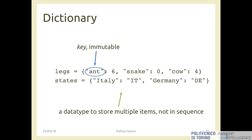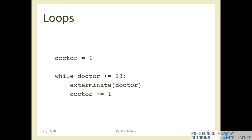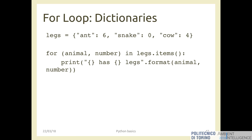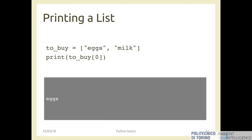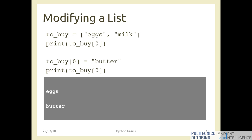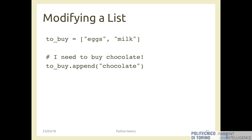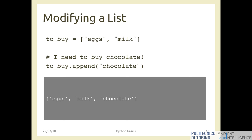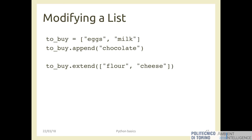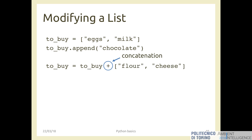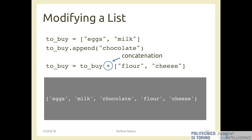The keys are immutable — you cannot change them once created. The value, instead, you can change whenever you want. We also saw how to print a list, print a single element, modify a list, replace an element, append a single element like chocolate, extend a list with more than one element such as flour and cheese, or extend a list using the concatenation operator. Last time we stopped there, basically.